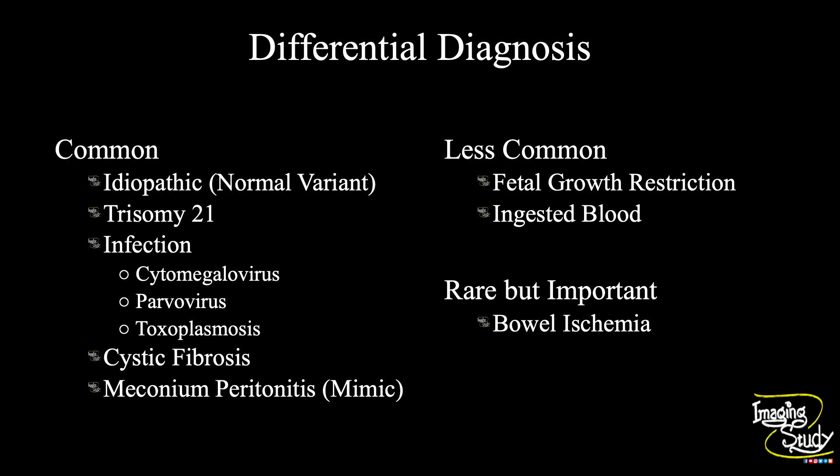Less commonly, we see it in fetal growth restriction. When there is an abruptio placenta, if blood enters into the amniotic cavity, the fetus may ingest the blood and you can get echogenic bowel. Rarely, but importantly, bowel ischemia may also present with echogenic fetal bowel.